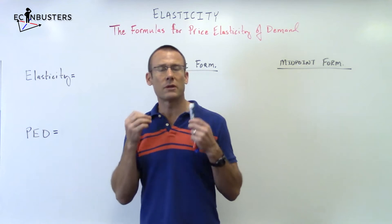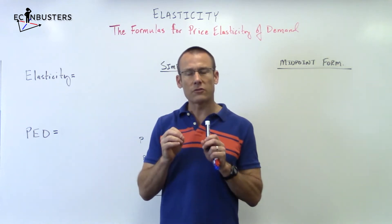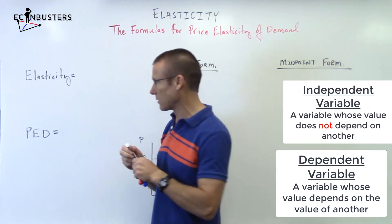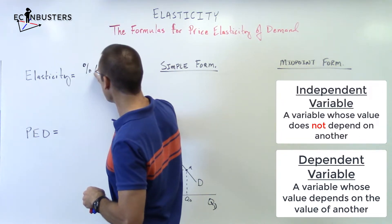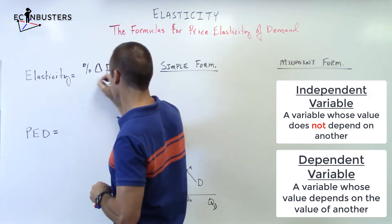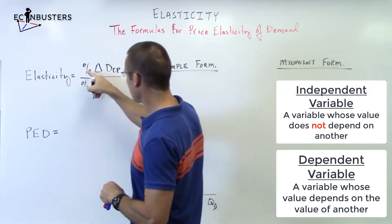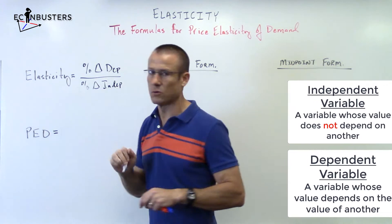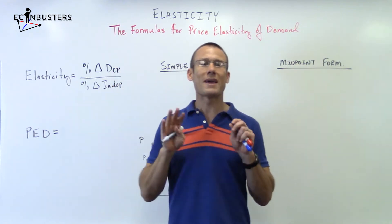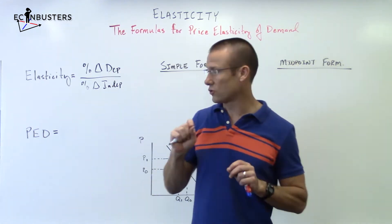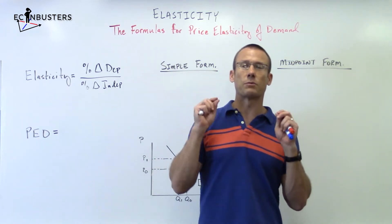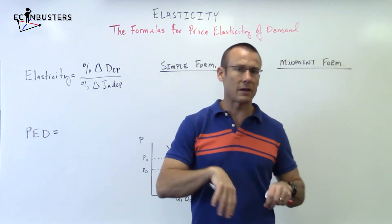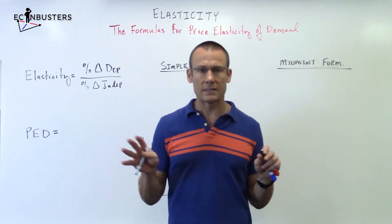What is elasticity? It is a measurement of responsiveness — the responsiveness of a dependent variable to an independent variable. That is the key. The general formula for elasticity, and this will never let you down, is: percent change in a dependent value over the percent change in an independent value. If you know this general formula, you can handle any elasticity measurement — price elasticity of demand, price elasticity of supply, cross price elasticity of demand, income elasticity of demand, or any other.